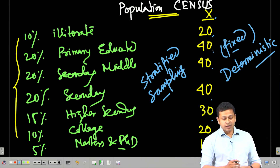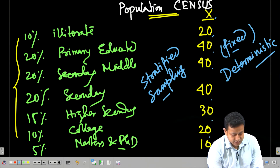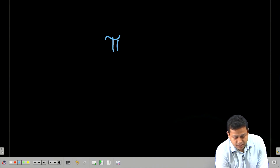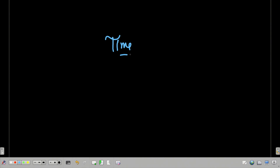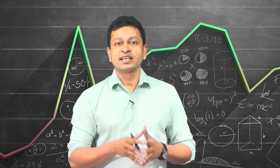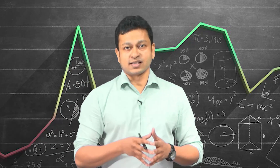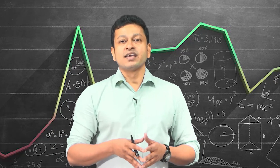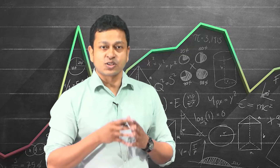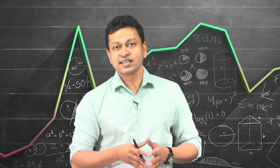One example I can give you of a non-stochastic regressor is time. Time is perhaps one variable where you really do not have any random component, but that sort of variable you can hardly see in reality. With this we will end this lecture on non-stochastic regressor, and in the next lecture we are going to talk about stochastic regressors and we will see the complexity that will arise if we take a stochastic regressor instead of a non-stochastic one.